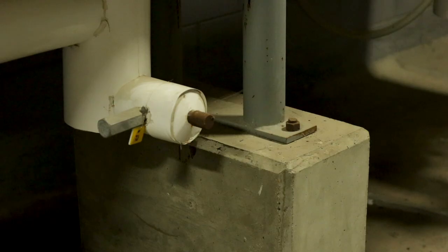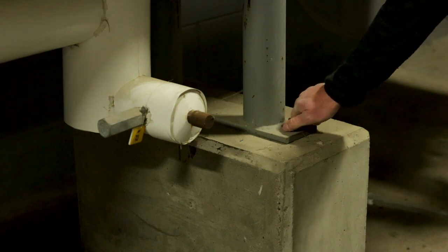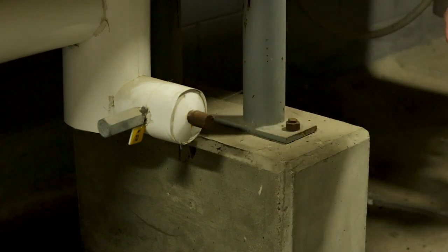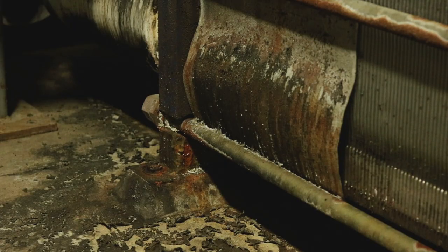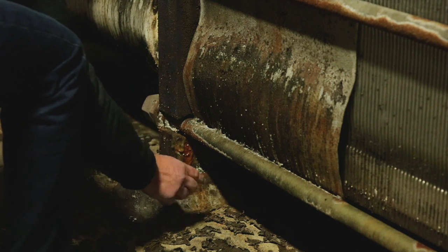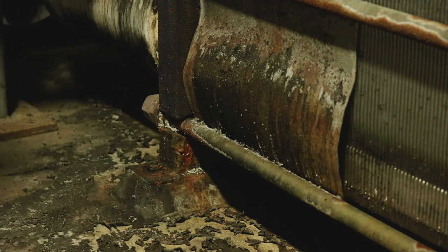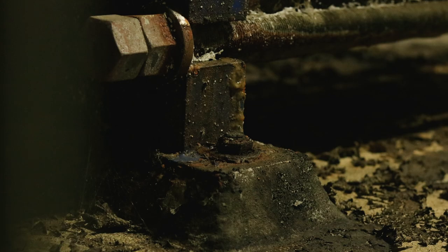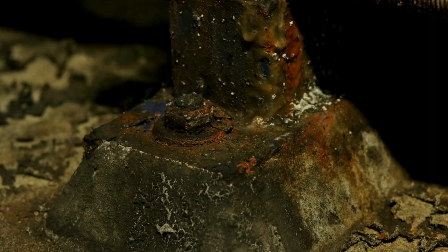Item D requires the inspector to verify that supports and anchorage are adequate. For a ground-mounted heat exchanger, the anchorage should be inspected to ensure that nuts are tight and free from corrosion. IIAR 6 has a separate piping checklist, so the focus of this question is not on pipe supports. This plate and frame heat exchanger anchorage has an unacceptable level of corrosion that must be addressed.